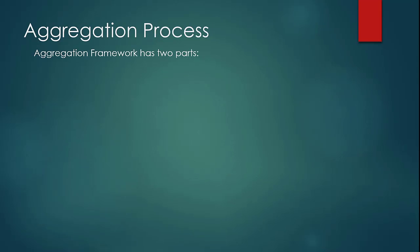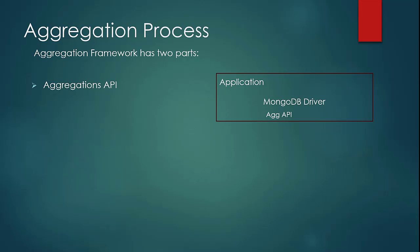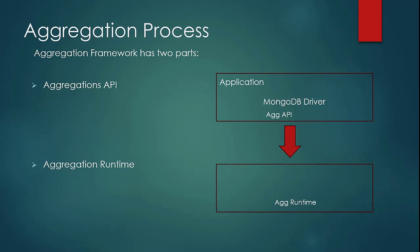The aggregation framework has two parts. There is the aggregation API, which resides in the MongoDB driver of the application on which you are running your aggregation query. And then there is the aggregation runtime, which resides on the database engine. The purpose of the aggregation API is to prepare the aggregation query and send it to the aggregation runtime, which runs it on top of the persisted data and provides you the output.